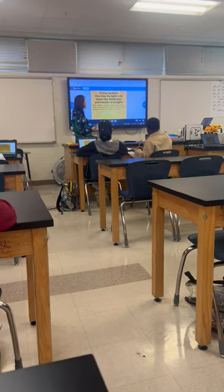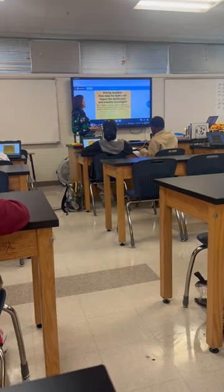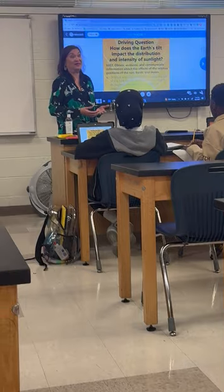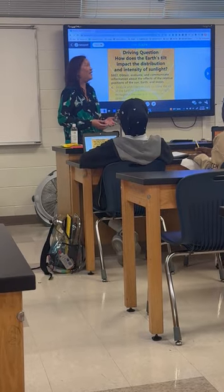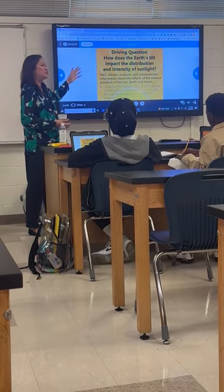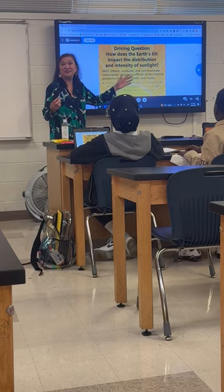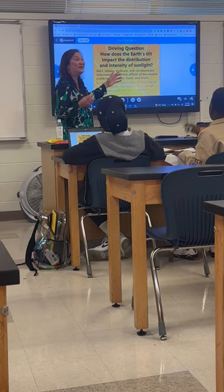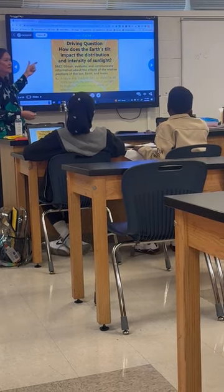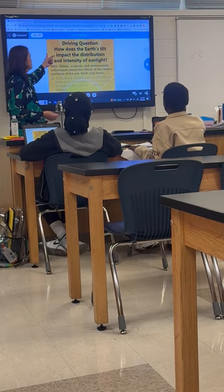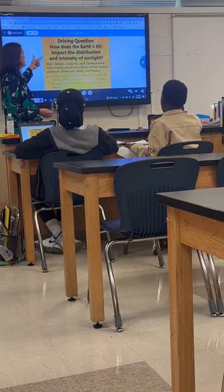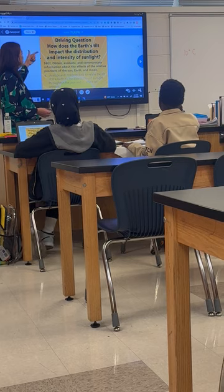Our unit on Earth's tilt, the season, and the distribution of sunlight. So, this is our essential question. Can somebody read what our essential question is? Goya: How does the Earth's tilt impact the distribution and intensity of sunlight?